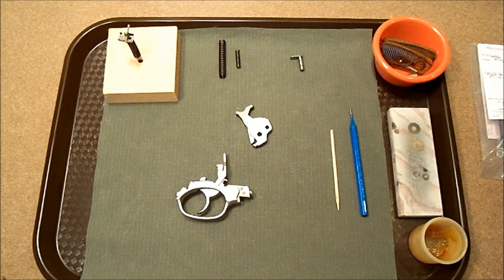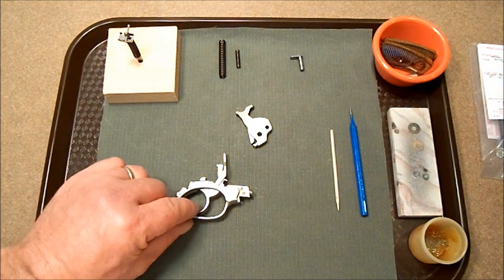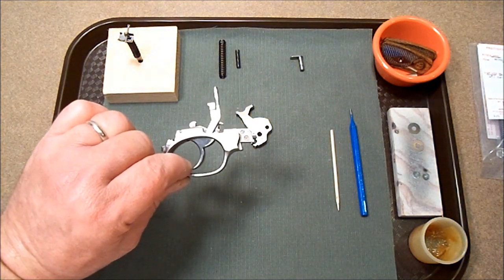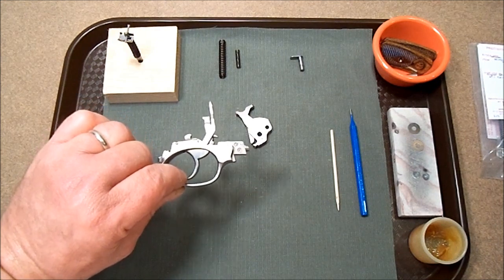Now all the Ruger Double Actions are about the same. This could be a Super Red Hawk or a GP-100 and all the procedures will be the same.